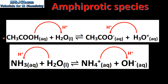In the previous video we looked at these two reactions. In the top reaction the ethanoic acid is donating a proton to the water molecule. In the bottom reaction the water molecule is donating a proton to the ammonia. In the top reaction the ethanoic acid, which is the proton donor, is the Brønsted-Lowry acid, and the water, which is the proton acceptor, is the Brønsted-Lowry base. In the bottom reaction the water is the proton donor, therefore it's the Brønsted-Lowry acid, and the ammonia is the proton acceptor — it's the Brønsted-Lowry base.